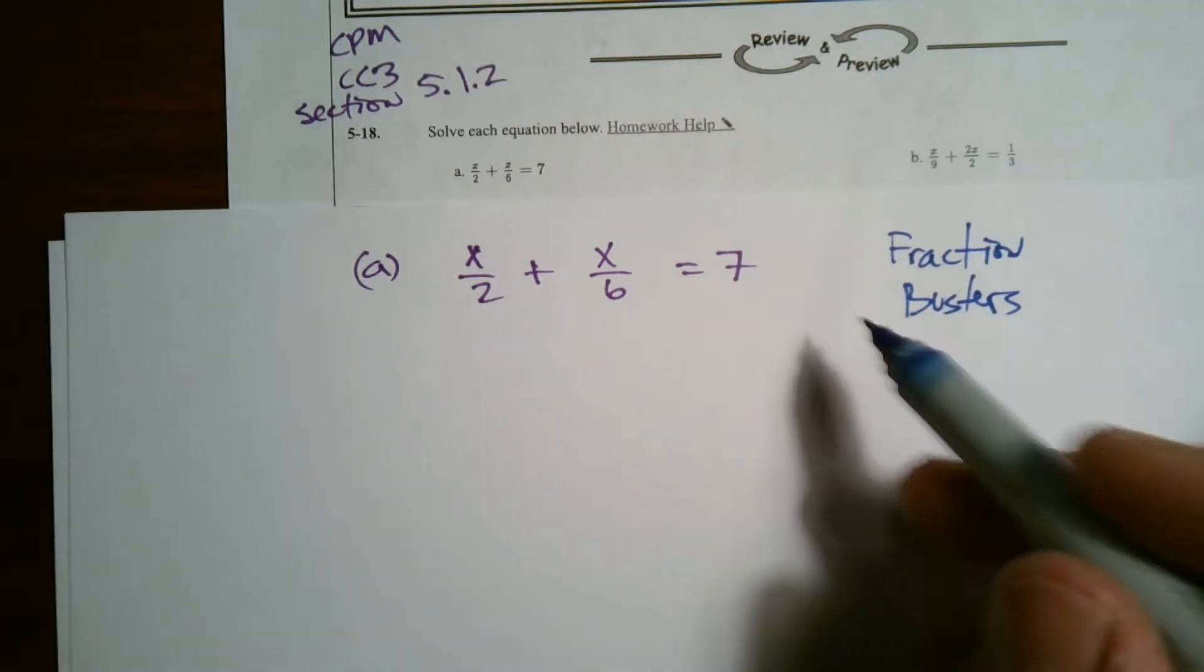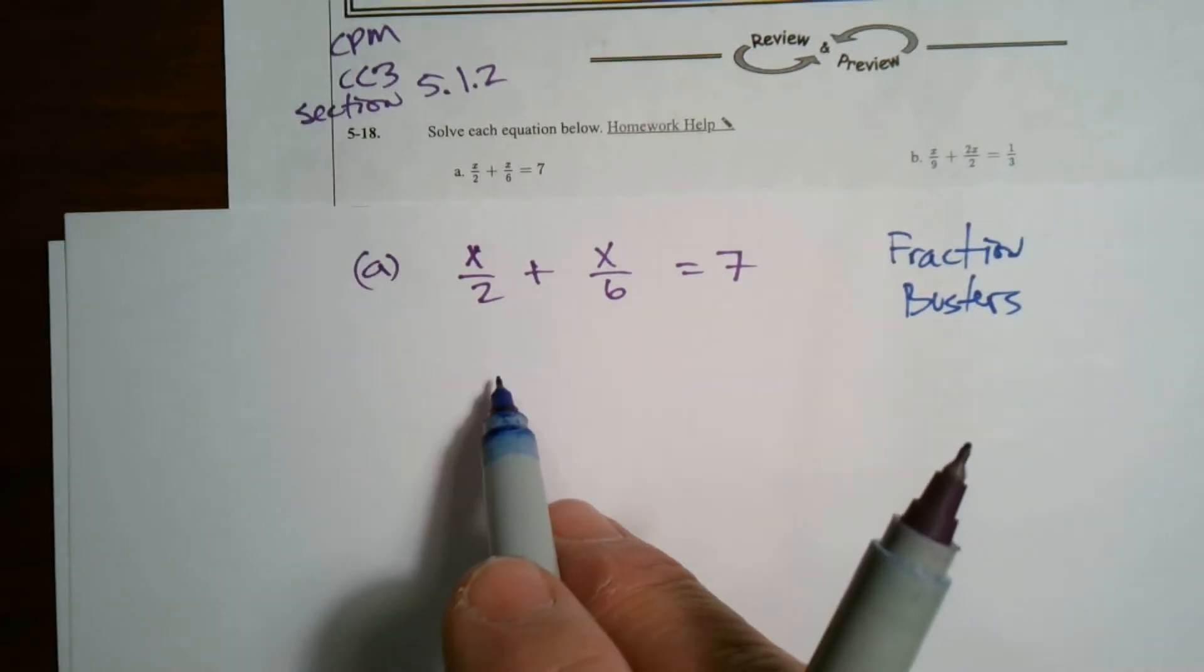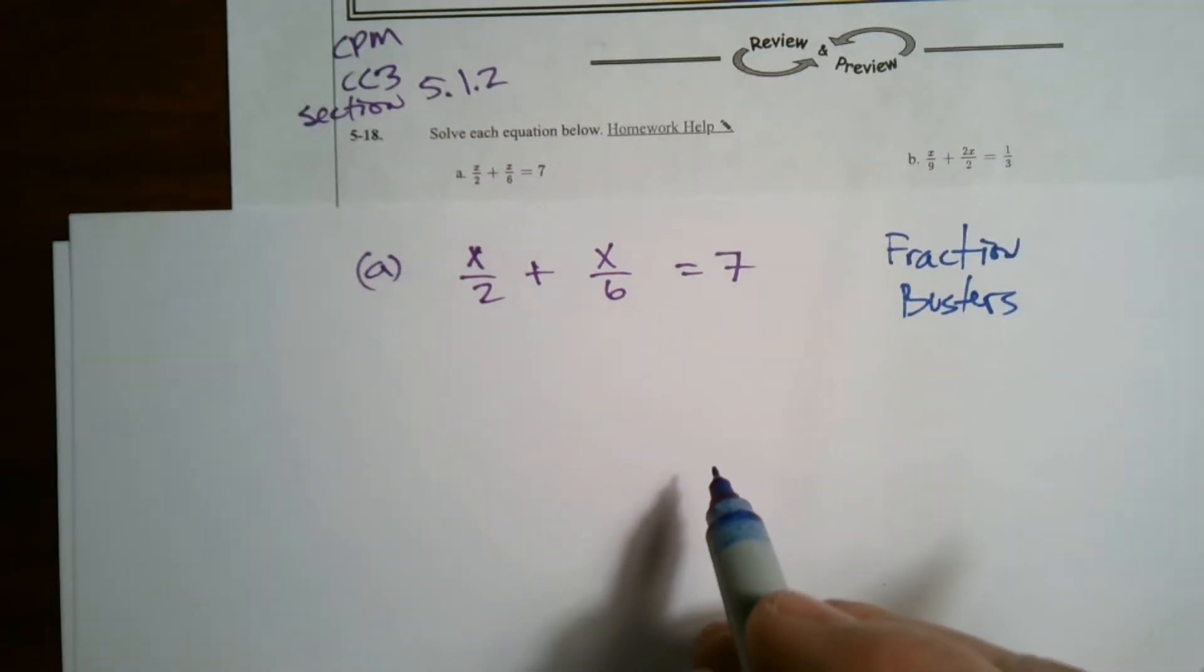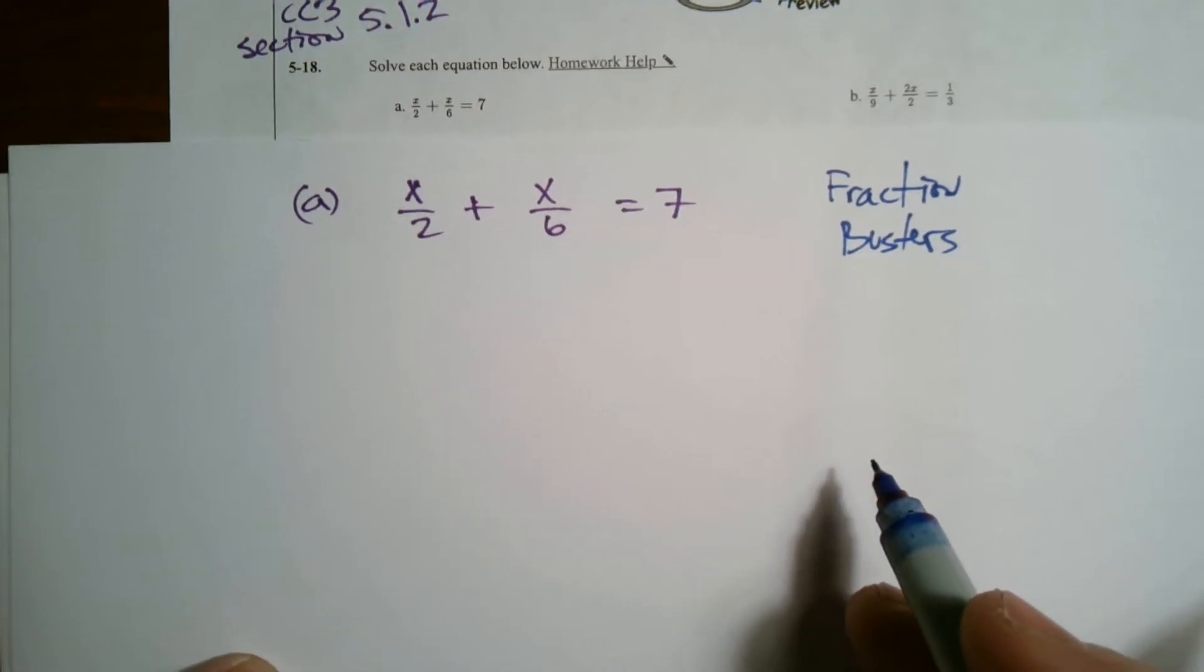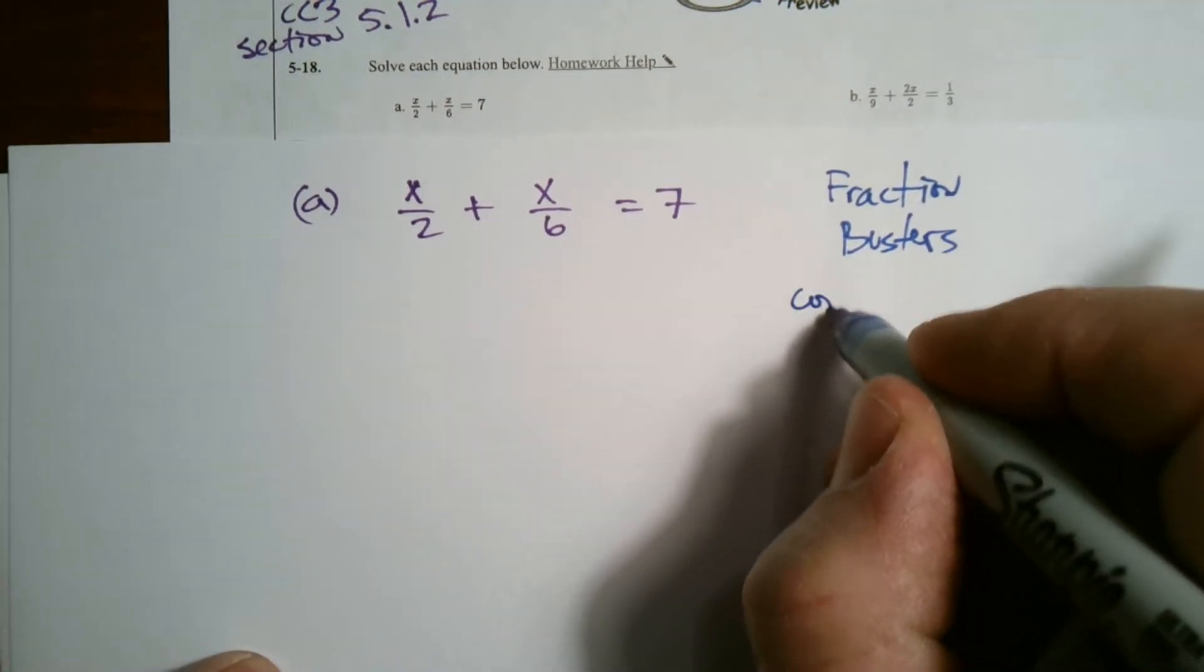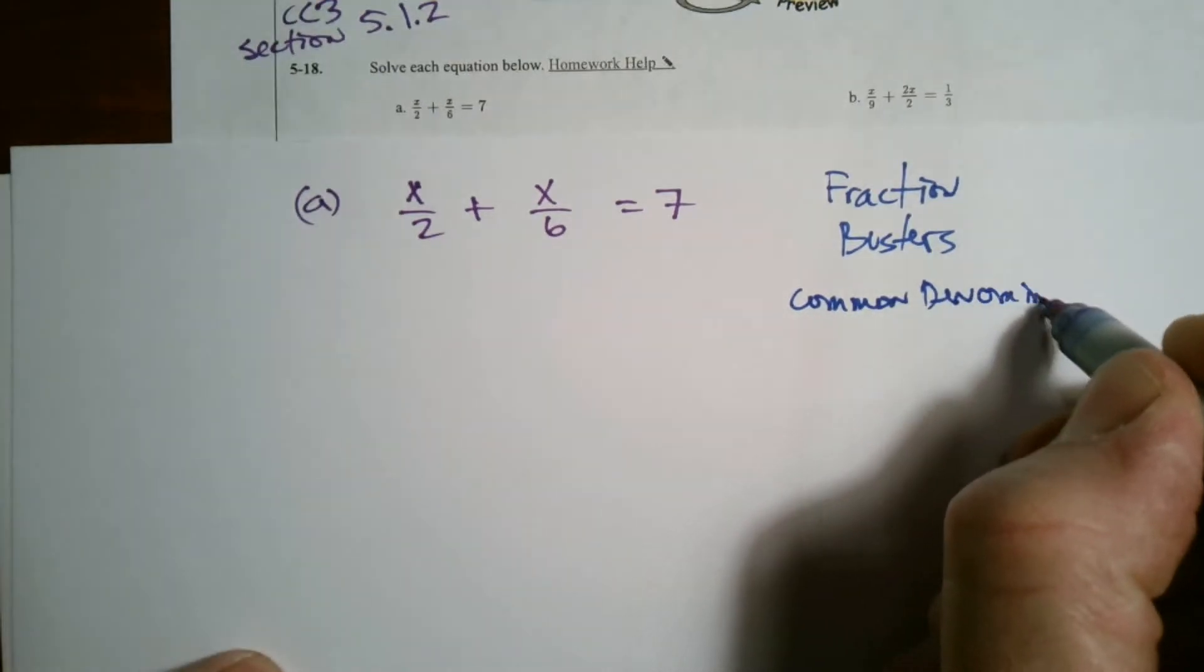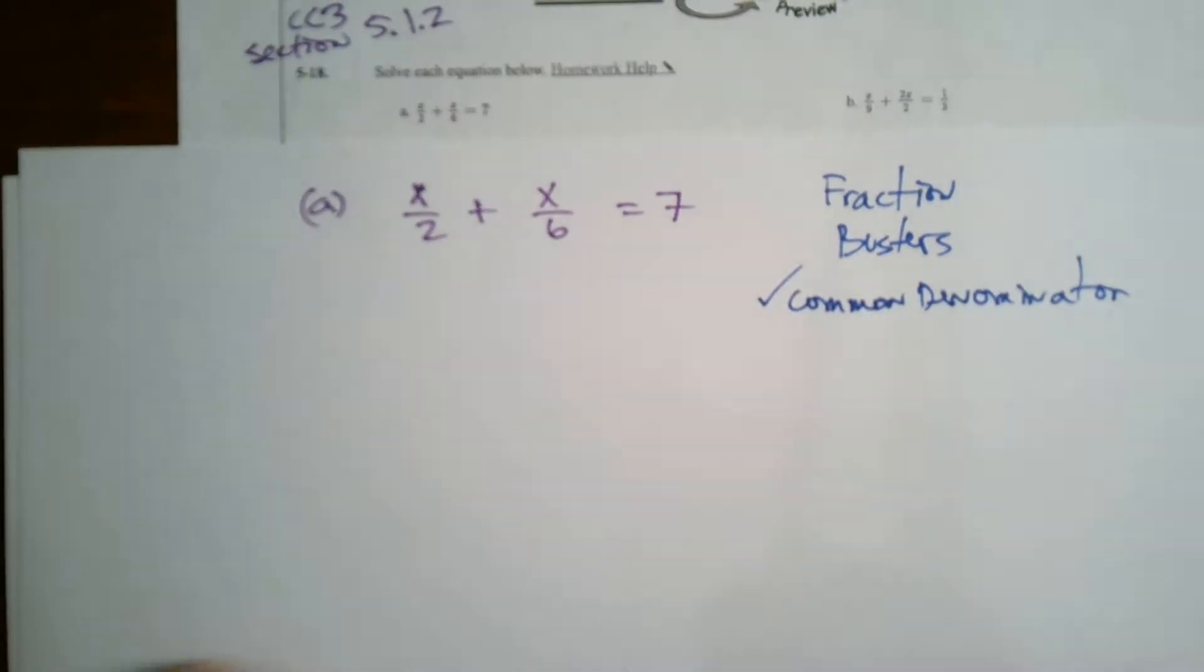So what is a fraction buster? A fraction buster is looking at the fractions and deciding what number or term do I multiply each of them by in order for all the fractions to go away. The best way of thinking about this would be finding the common denominator. So the fraction buster is your common denominator.